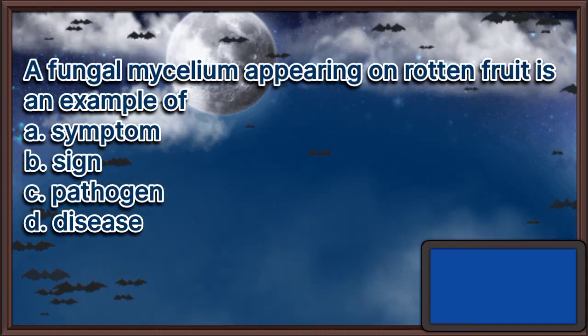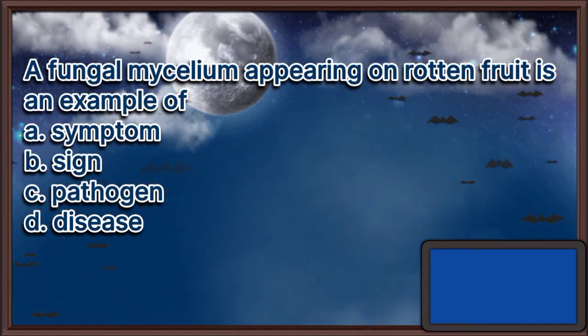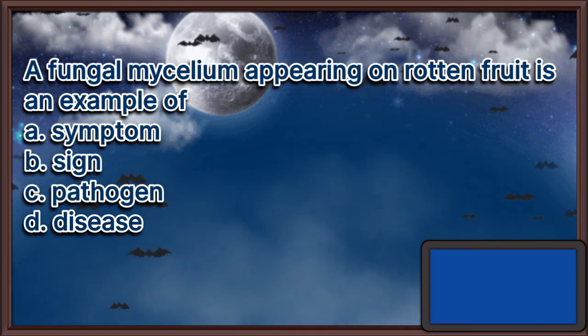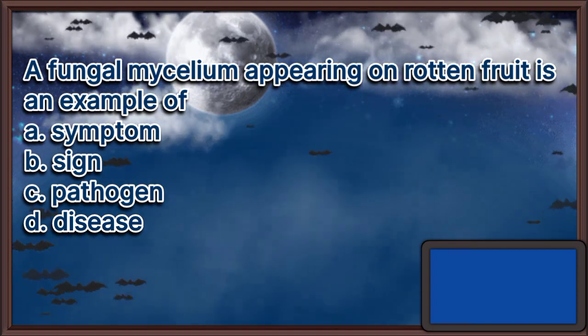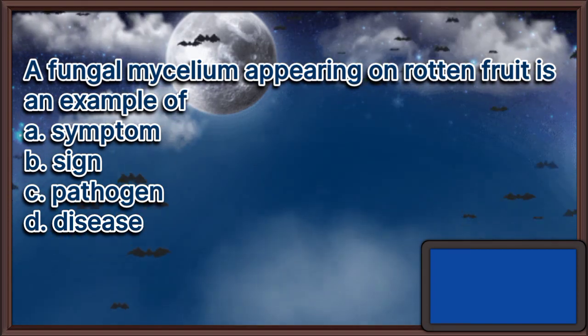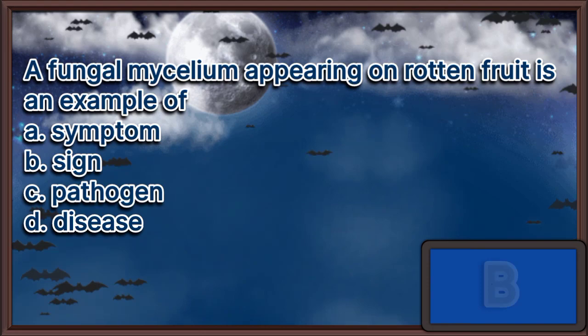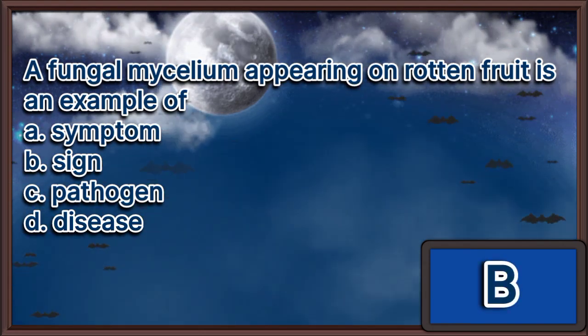A fungal mycelium appearing on rotten fruit is an example of: A. Symptom. B. Sign. C. Pathogen. D. Disease. The answer is letter B.